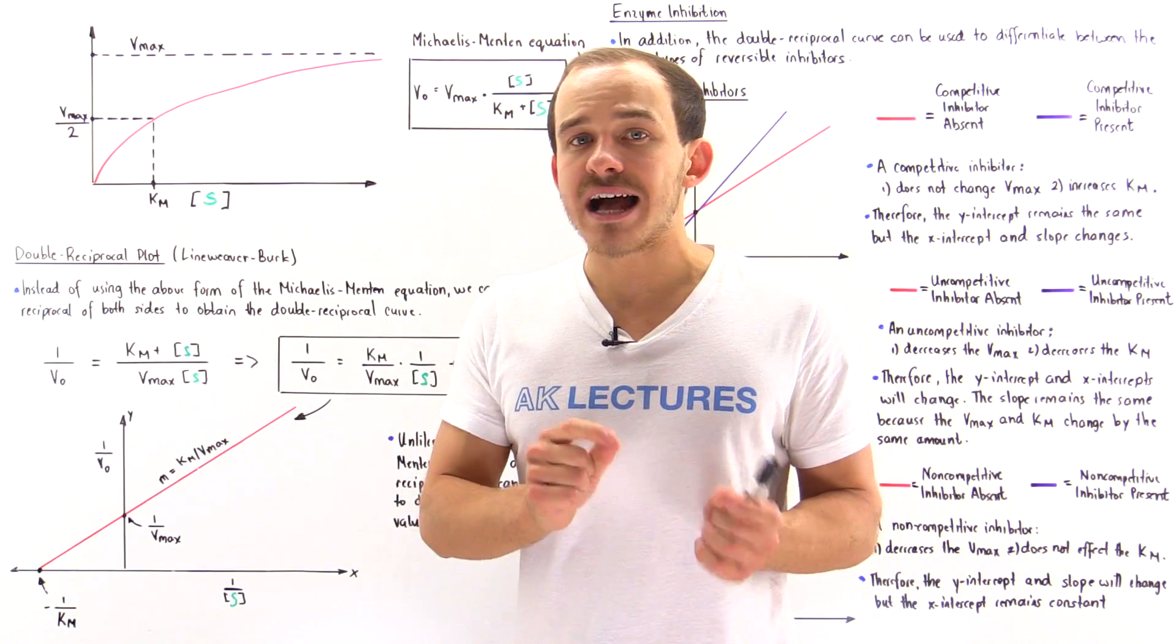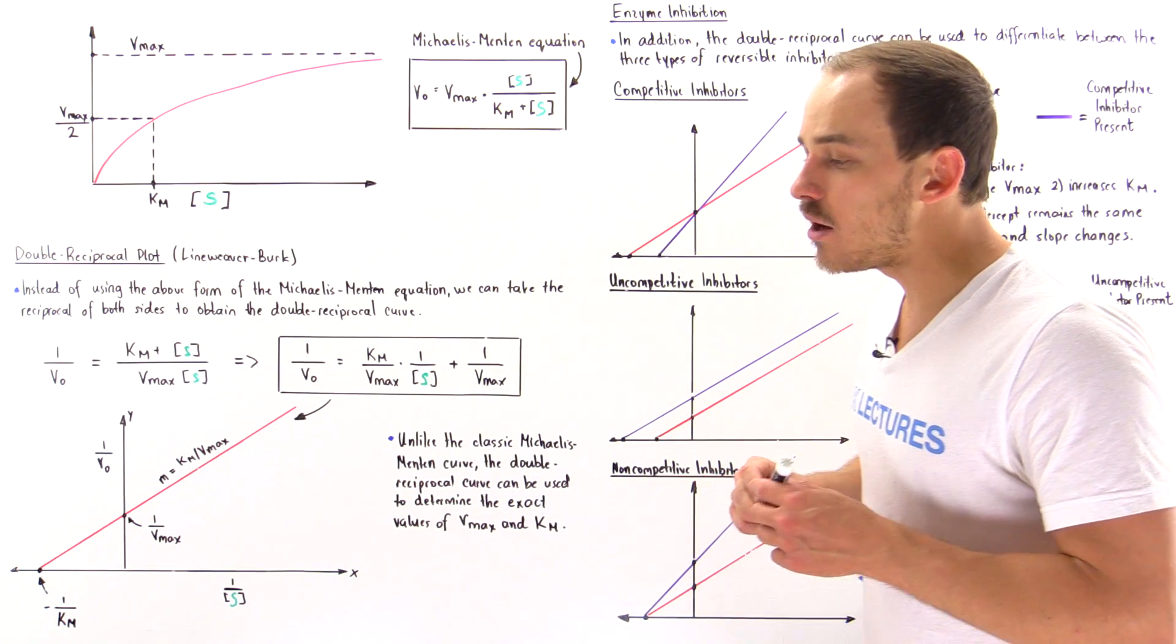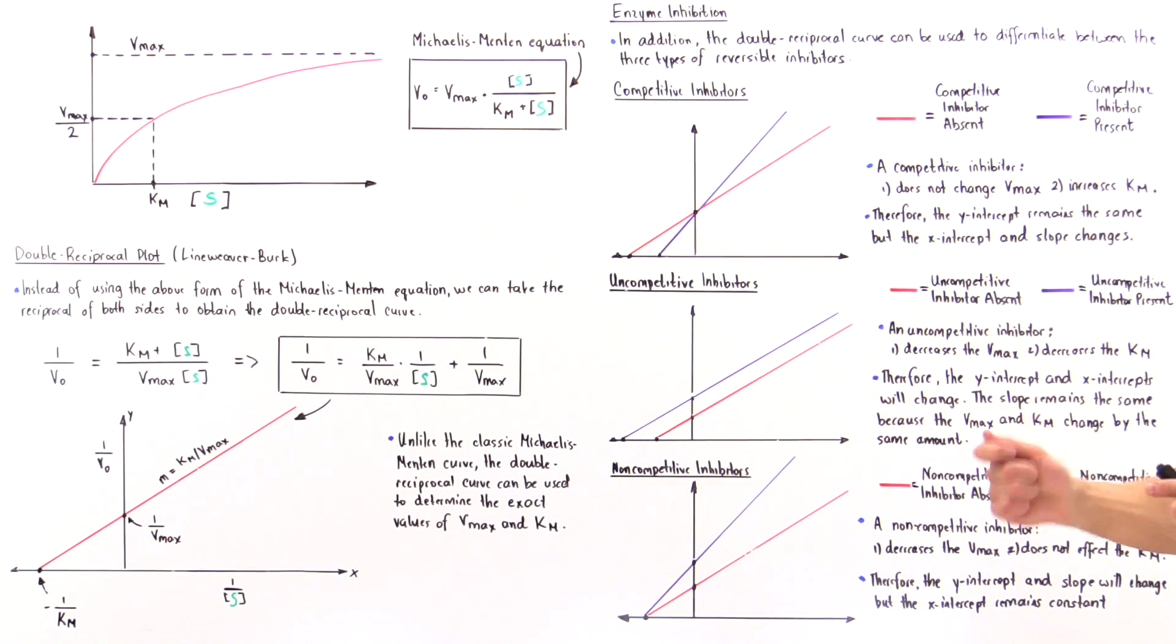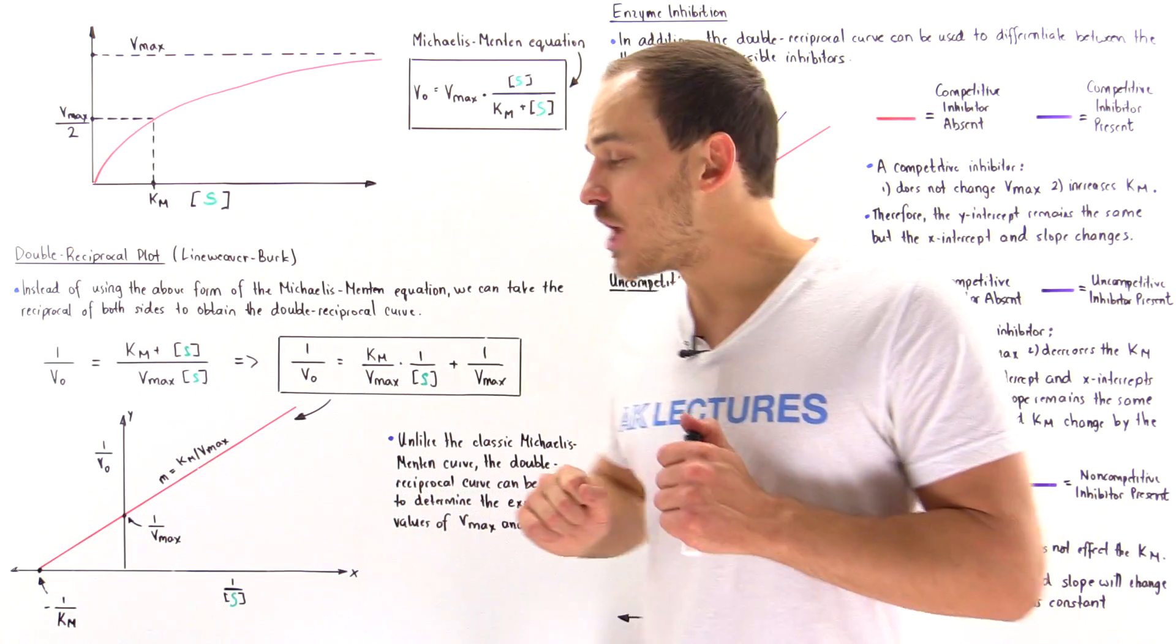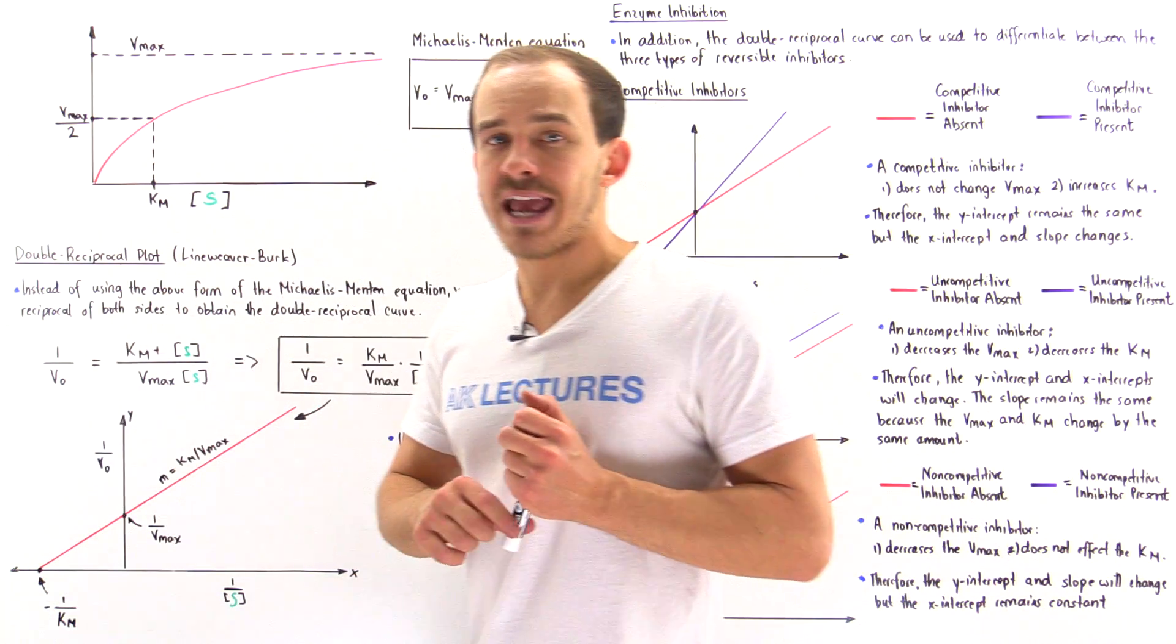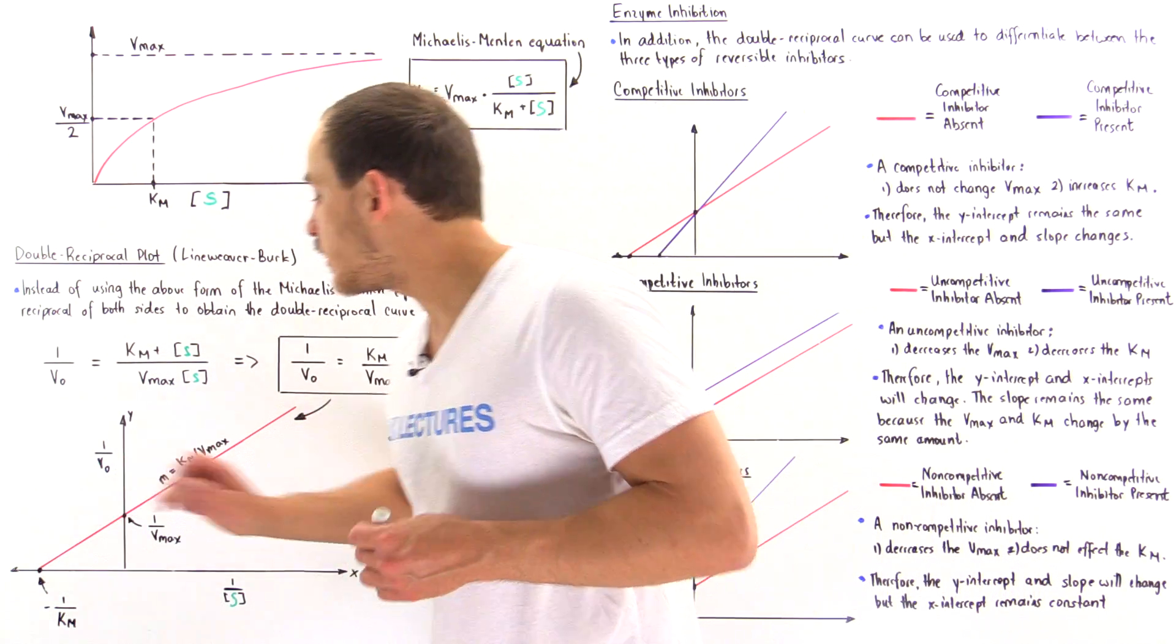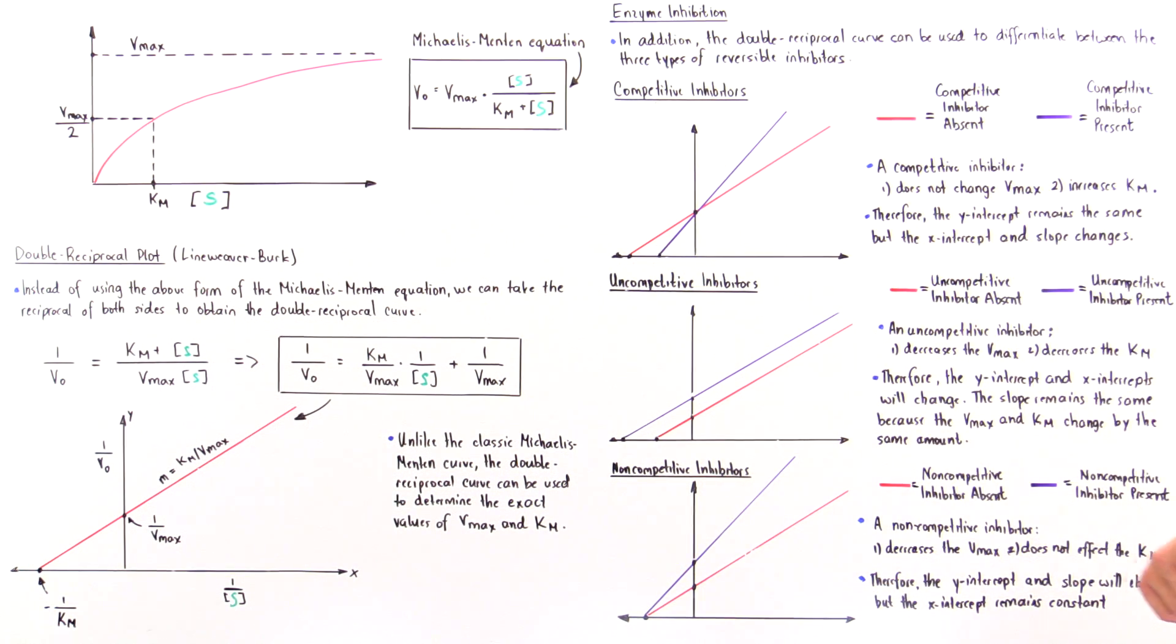The substrate can bind onto that enzyme regardless of whether or not the inhibitor is actually bound, and it binds with the same exact affinity. And that means the Km value will not change. And if Km doesn't change, then 1 divided by Km certainly will not change. And so that's exactly why the X intercept is the same in this particular case.